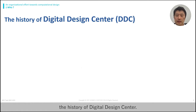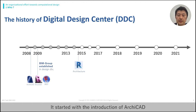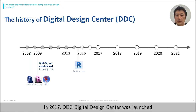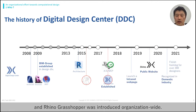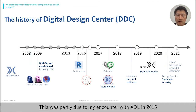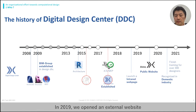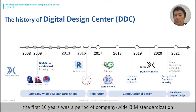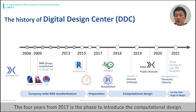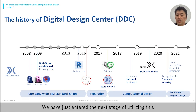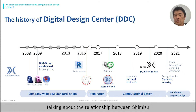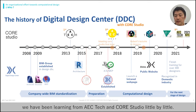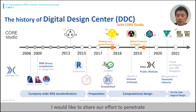Let me briefly introduce the history of the Digital Design Center. Shimizu introduced BIM in 2008. It started with the introduction of ArchiCAD and was unified into Revit in 2014, along with the structure and construction teams. In 2017, DDC was launched and Rhino and Grasshopper were introduced organization-wide. This was partly due to my encounter with ADL in 2015, which I will explain more later. In 2019, we opened an external website which became widely known to the domestic construction industry. To summarize, the first 10 years was a period of company-wide BIM standardization. The 4 years from 2017 was to introduce computational design. We have just entered the next stage of utilizing this in our design work. We have been participating in ACTEC since the 5th event in 2017 and have been learning from ACTEC and Core Studio little by little.